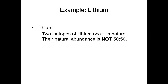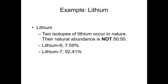The two isotopes are lithium-6 and lithium-7. 7.59% of the lithium atoms found in nature are lithium-6, and the other 92.41% are lithium-7. So now how are we going to calculate the atomic mass of lithium? We're not just going to add 7 and 6 and divide by 2, because they don't occur in the same abundance. If you think ahead, since more than 90% of lithium in nature is lithium-7, it's reasonable to expect that the weighted average mass will be much closer to 7 than to 6.